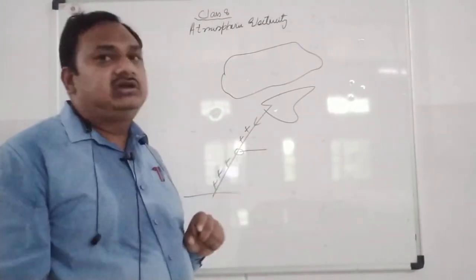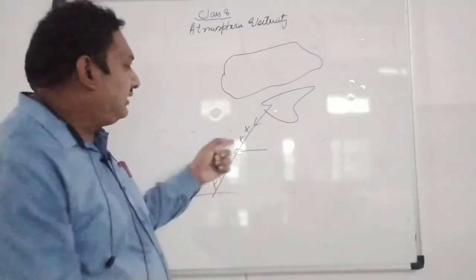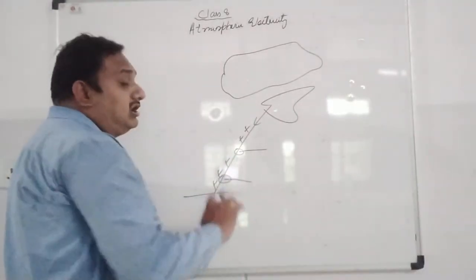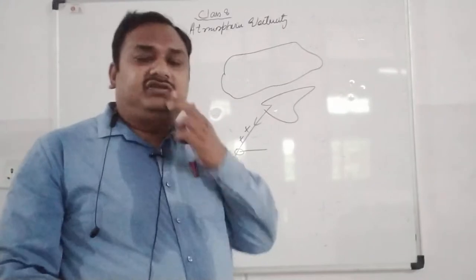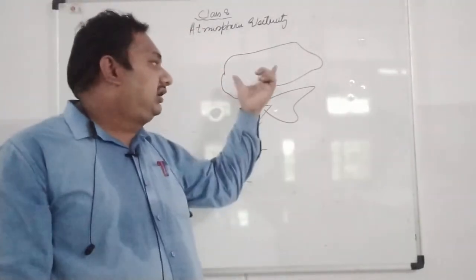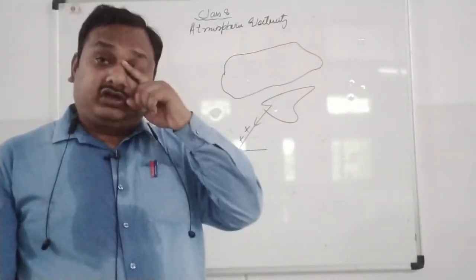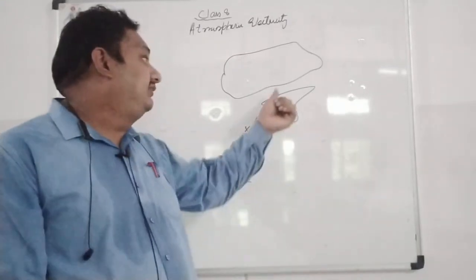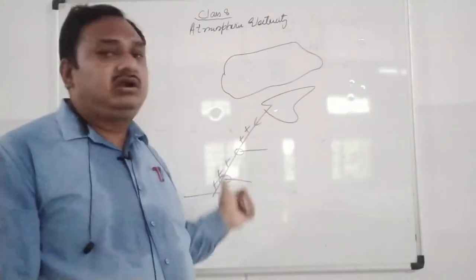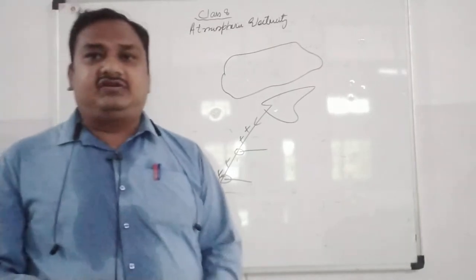When Benjamin Franklin touched that metallic key, he got an electric shock. From this experiment, Benjamin Franklin came to know that clouds consist of electric charge, and that charge came via the wet wire. He got an electric shock.